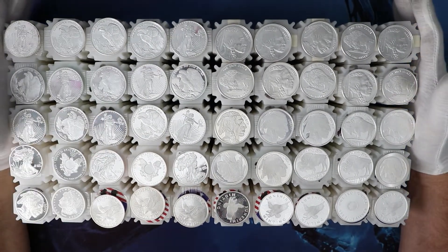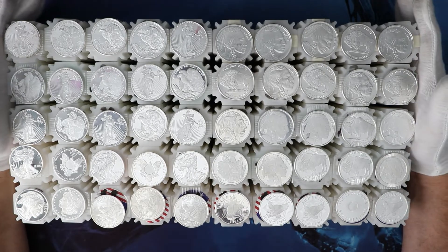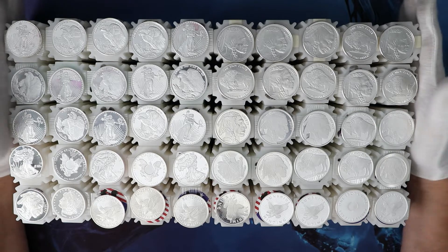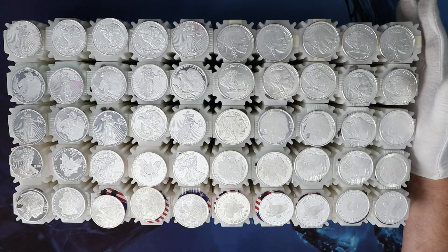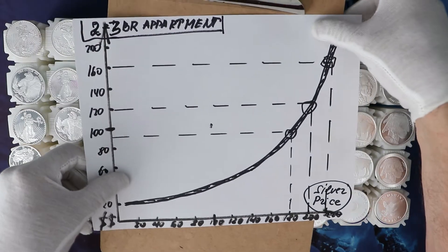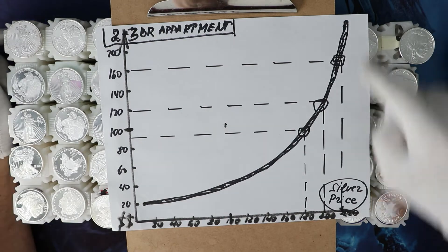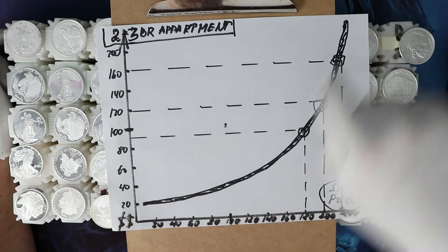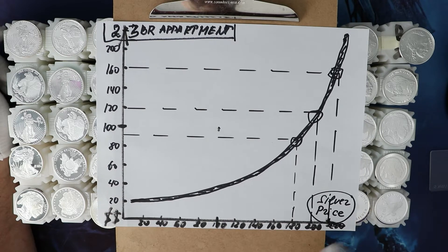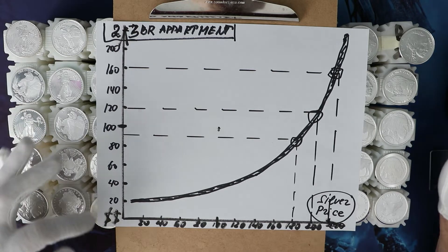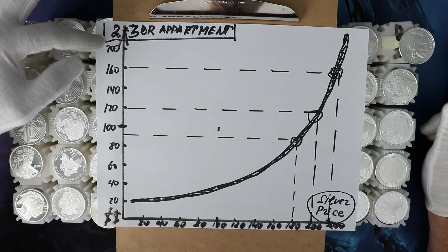Back to the topic — how you can trade. I did my homework here. I have a graph — it's called a hyperbola. This is the price of silver: 20, 40, 60, 80, 100, 120, 140, 160, 180, 200. And this is the price of a two or three bedroom apartment: 20, 40, 60, 80, 120, 140, 160, 200. Right now the price of a two or three bedroom apartment is somewhere in this area.